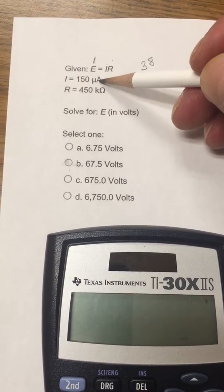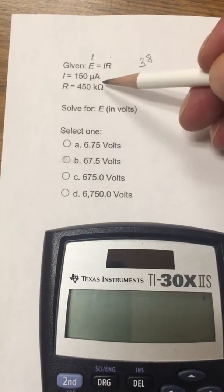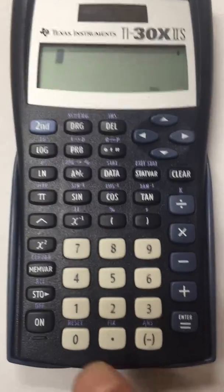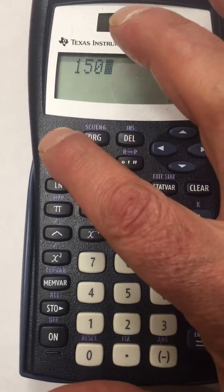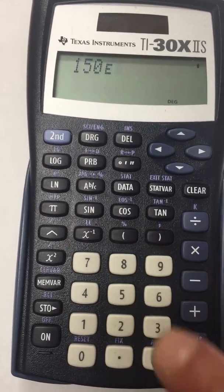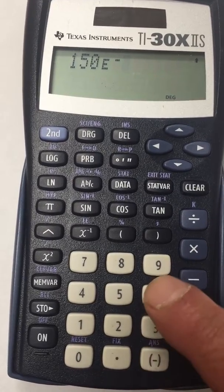I'm assuming your issue is punching this in. So that'd be 150 micro. So I'm going to go 150, second function, double E, negative 6.